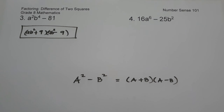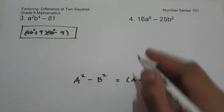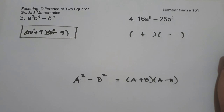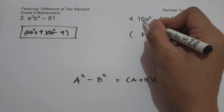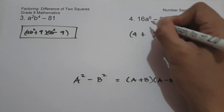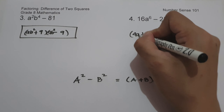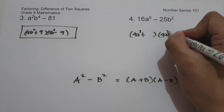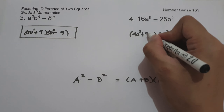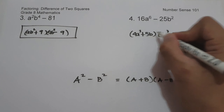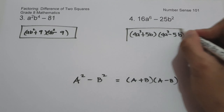On number four, we have 16a raised to the 6th minus 25b squared. Let us have the product of the sum and difference of two terms. The square root of 16 is 4, the square root of a raised to the 6th is a cubed (dividing 6 by 2), the square root of 25 is 5, and the square root of b squared is b. So the factored form is quantity 4a cubed plus 5b times quantity 4a cubed minus 5b, and this will be our answer.